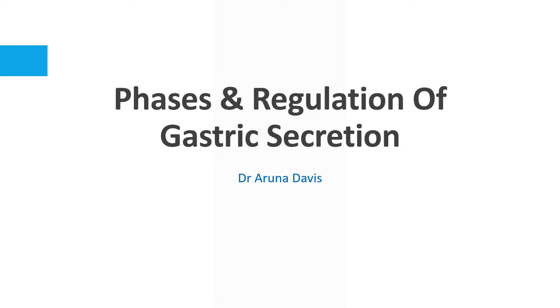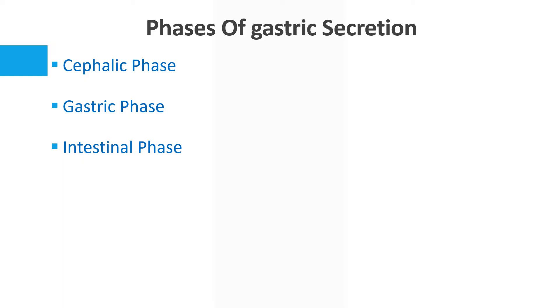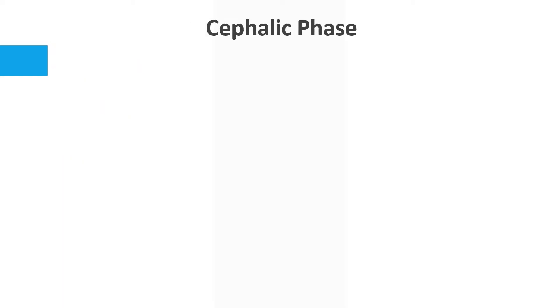In this video we're going to see about the phases and regulation of gastric secretion. The phases of gastric secretion are the different stages at which gastric juice is secreted from the gastric glands. First we've got the cephalic phase, the gastric phase, as well as the intestinal phase.